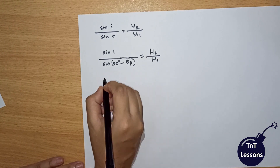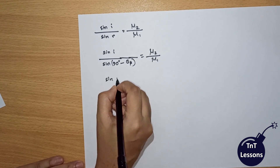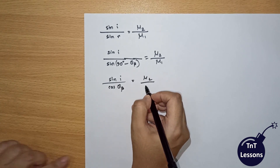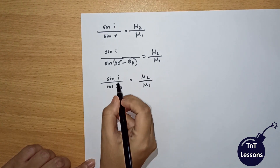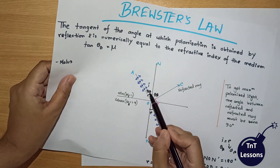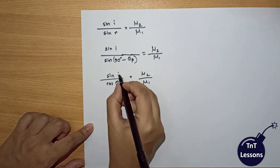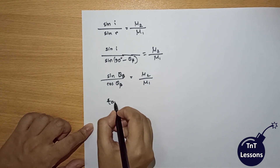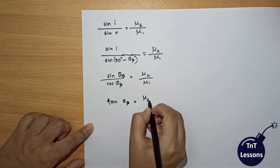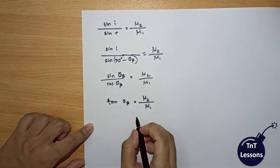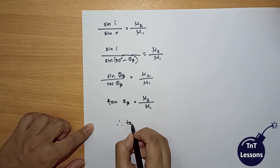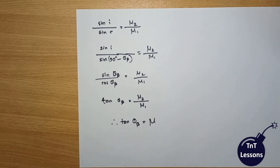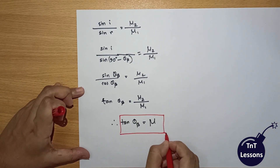This gives sin i over cos theta B equals mu. Therefore sin theta B over cos theta B, which is the expression for Brewster's Law.